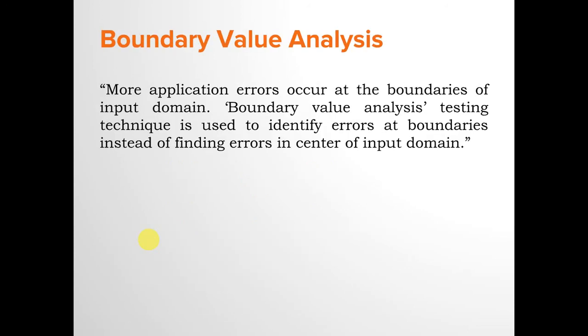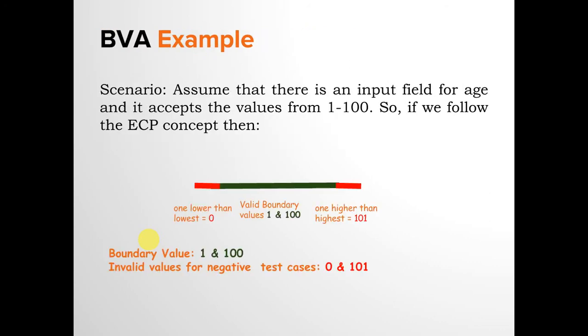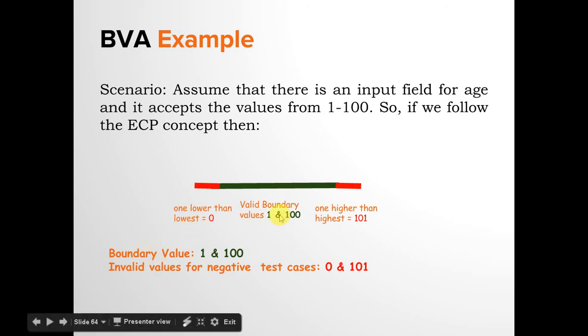Next is boundary value analysis. More application errors occur at the boundaries of the input domain. Boundary value analysis is a testing technique used to identify errors at boundaries rather than finding errors at the center of the input domain. Using the same age field example, instead of focusing your testing on the center of the data — around 50 — the boundary values for the given requirement are 1 and 100: 1 is the lowest valid value and 100 is the highest valid value.